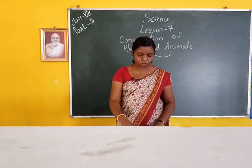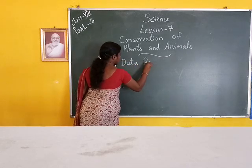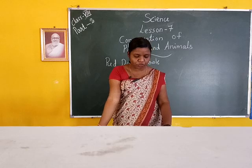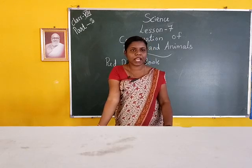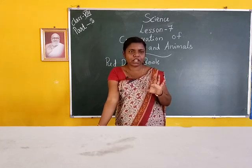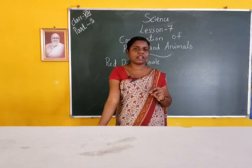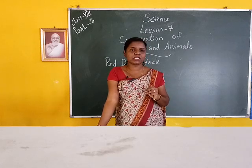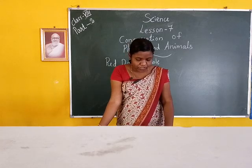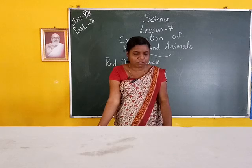Next we study the red data book. The red data book is a source book which keeps a record of all the endangered animals and plants. It is like a register that tracks which species are present. The red data book is maintained internationally, and India also maintains a red data book for plants and animals found in India.